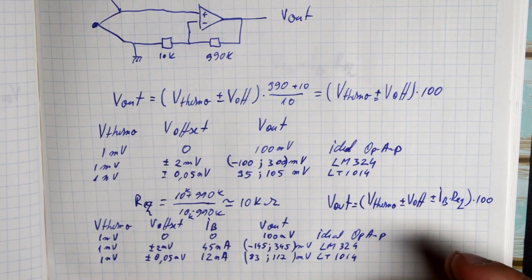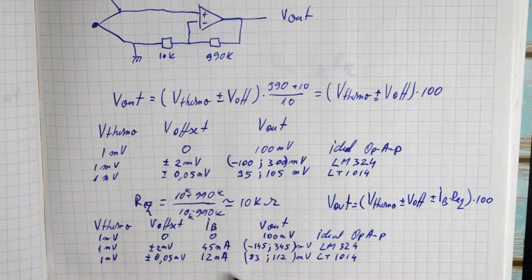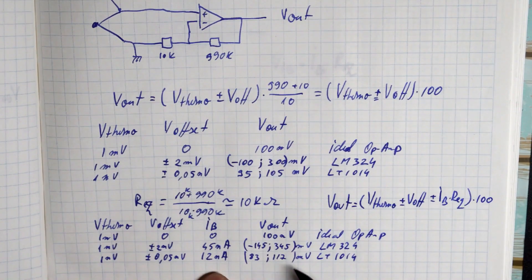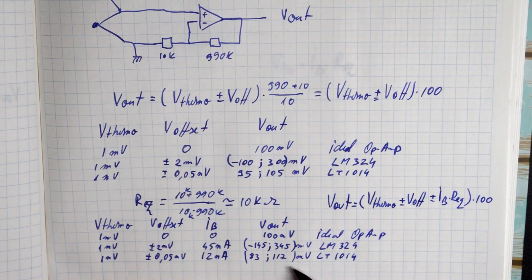Now on the other hand, if we look at the LT1014, first time we had quite a decent output value. This time, our bias current is causing quite a significant influence on our offset. So basically, we've ruined our precision. But there is hope.